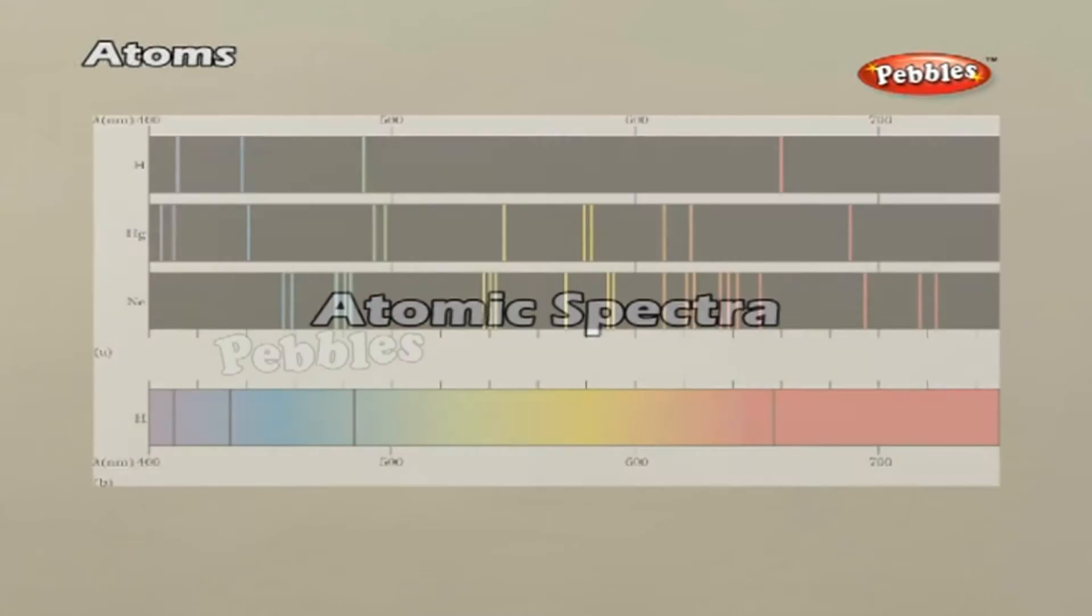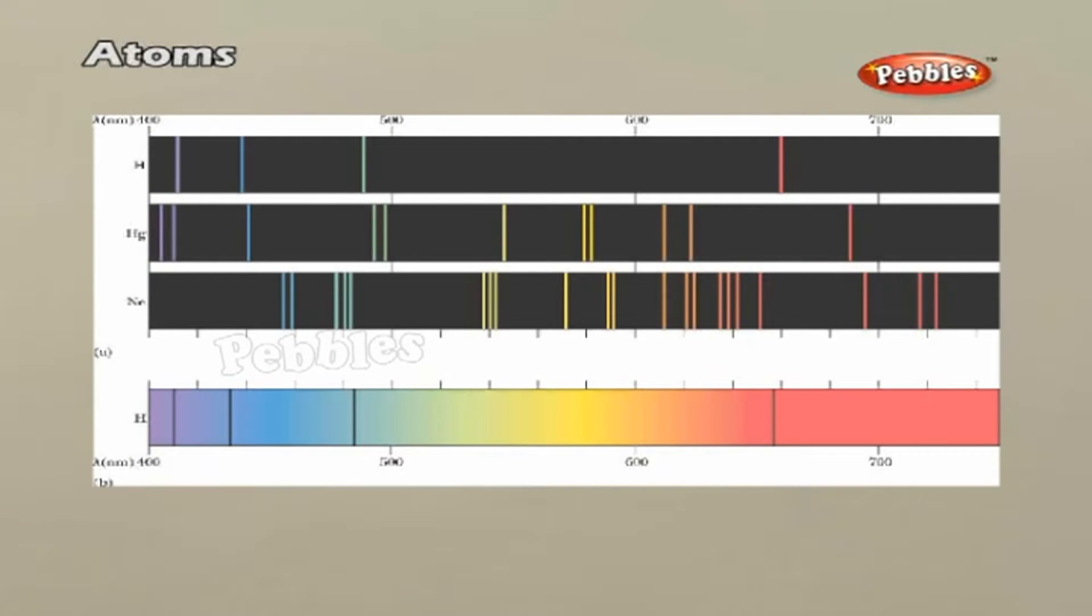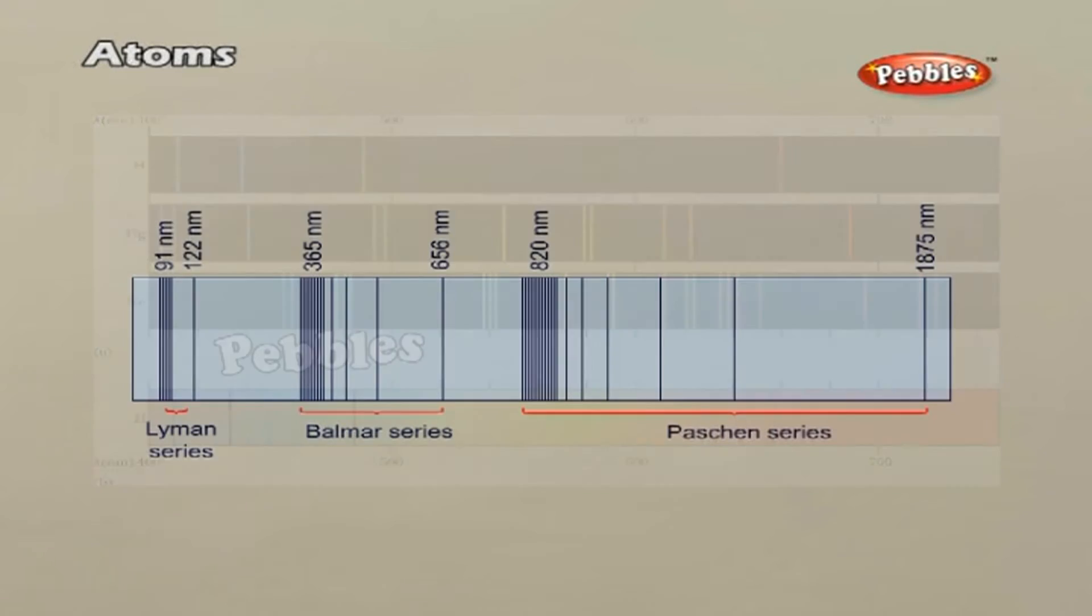Atomic spectra: When an atomic gas or vapor is excited at low pressure, usually by passing an electric current through it, the emitted radiation is a spectrum which contains certain specific wavelengths only. A spectrum of this kind is termed as emission line spectrum and it consists of bright lines on a dark background.